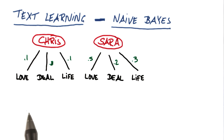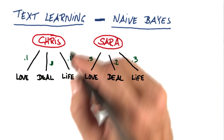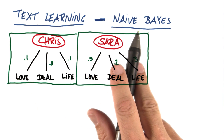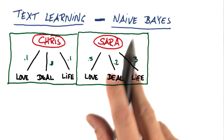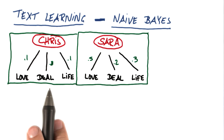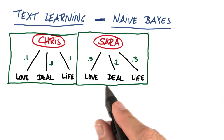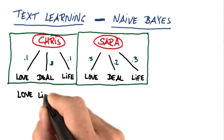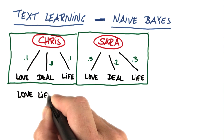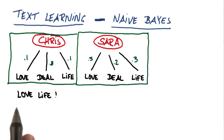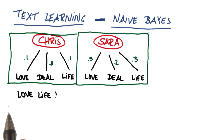But Sarah talks more about love, a little bit about deals — 0.2 — and about life — 0.3. That's a simplified example. What Naive Bayes allows you to do is to determine, based on a random email, who is the likely person who sent it. Suppose there's an email that says 'love life' and you don't know who sent it, but you'd like to figure that out. You can do this based on Bayes' rule.